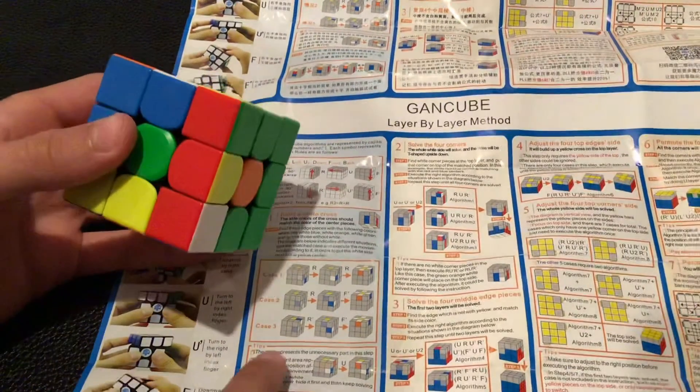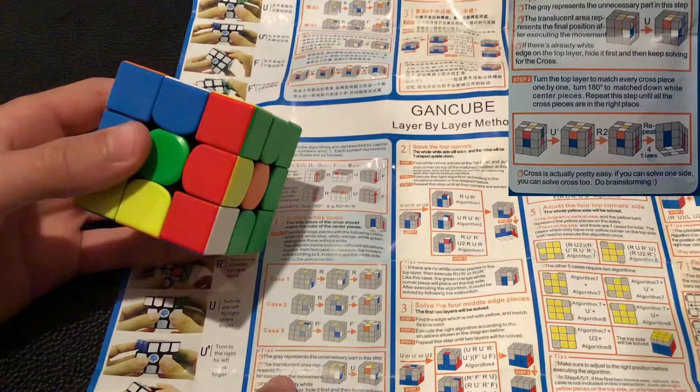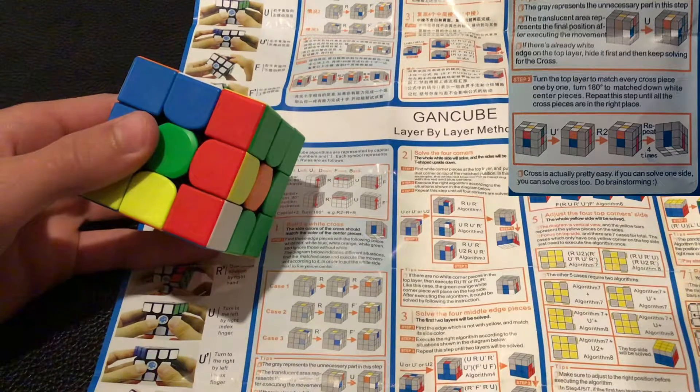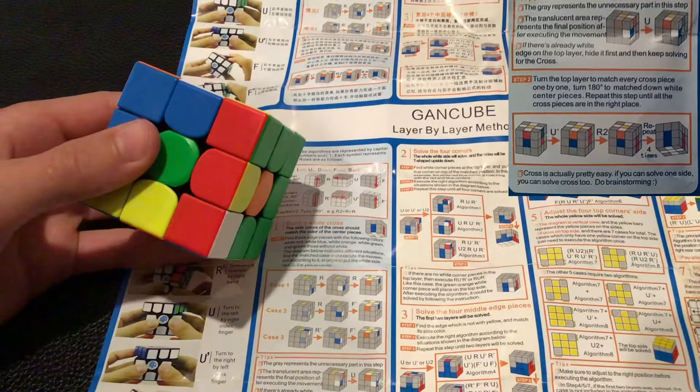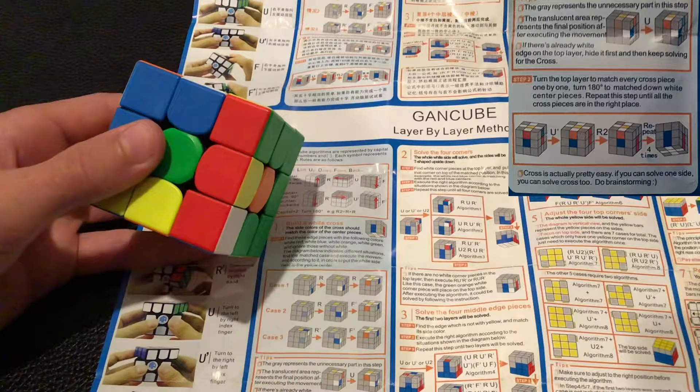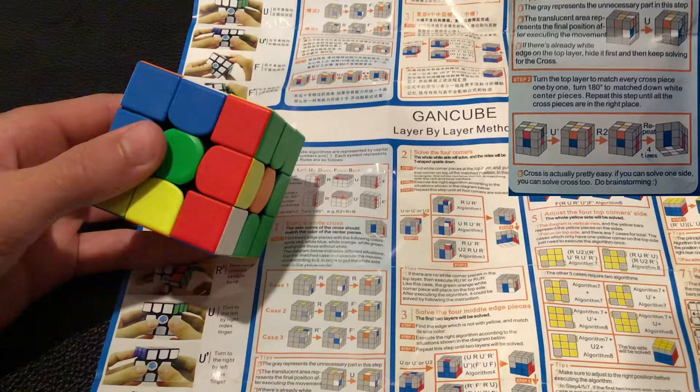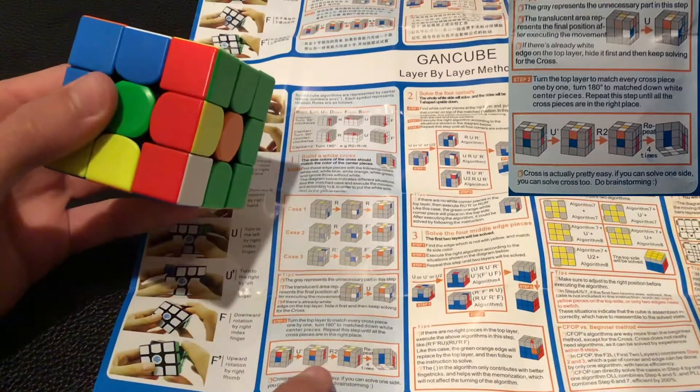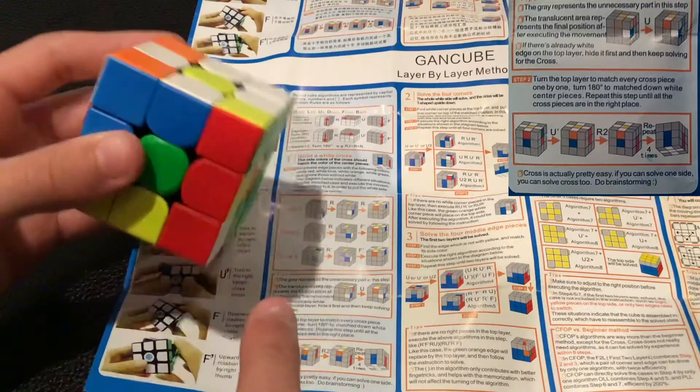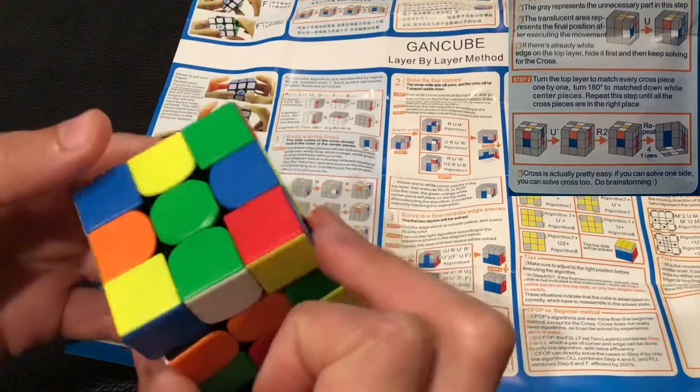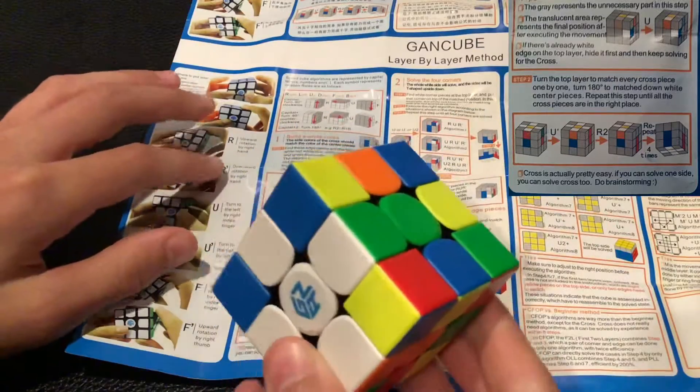Now the next step is turn the top layer to match every cross piece one by one. And then turn 180 degrees, the matched down white center pieces. Repeat this step until all the cross pieces are in the right place. So it doesn't look like I have any matched up yet. So I can just match up the red right there, put it in, orange, blue, and then green right there. And I have my cross solved using the basic GAN method.